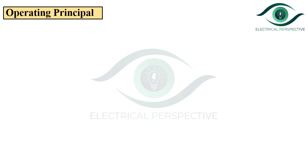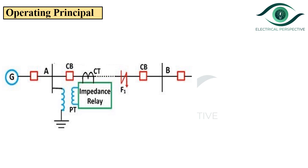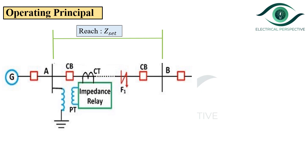Let us see the operating principle. Consider the transmission line AB as shown in the figure. Assume that there is a source only at end A and we wish to generate a zone of protection which extends from A to B. Assume that the impedance relay is located at end A. The impedance relay requires two quantities as input: voltage, taken from a PT (potential transformer), and current, taken from a CT (current transformer). As we wish to extend the protection to section AB, the reach of the distance relay is made equal to Z-set, which is the impedance of section AB under normal operating conditions.